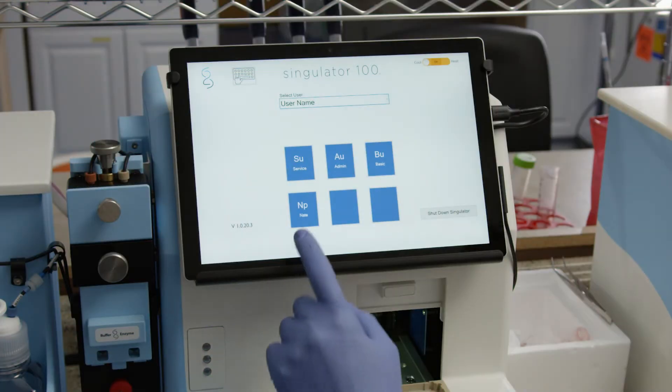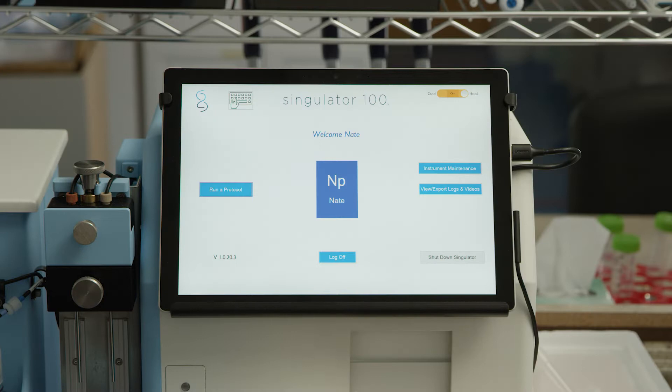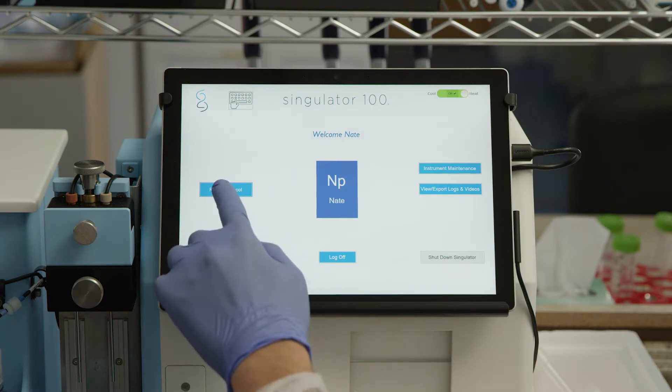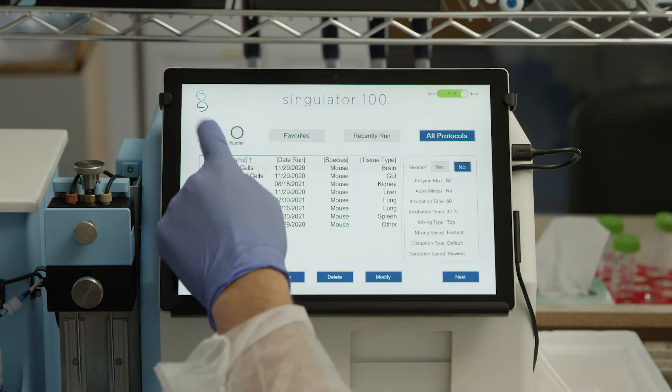Login to the Singulator software as an admin or basic user, or use your personalized user ID and password. Select the option for cell isolations.